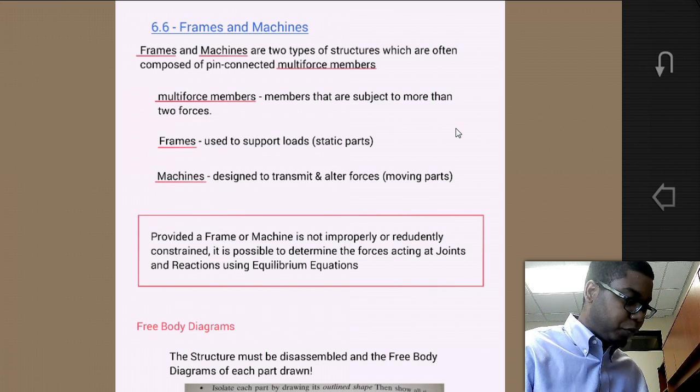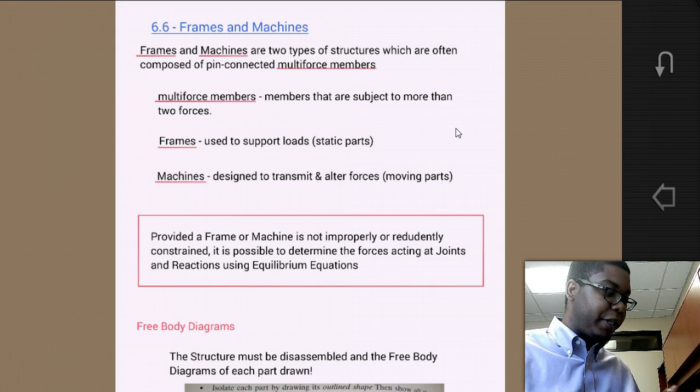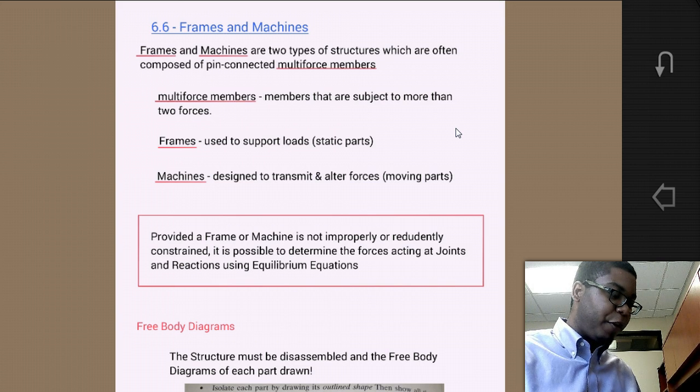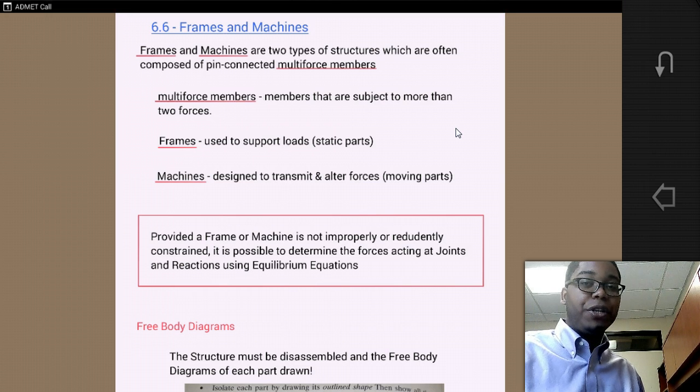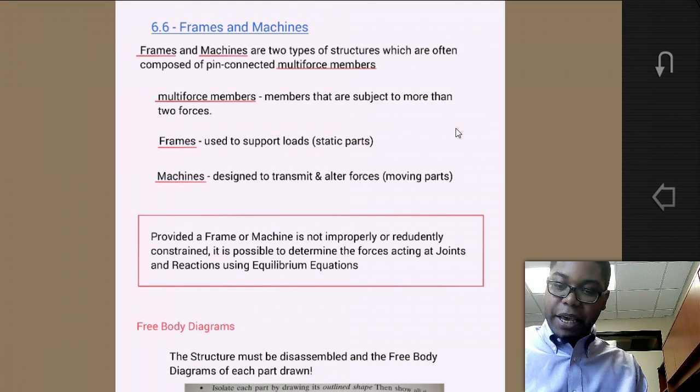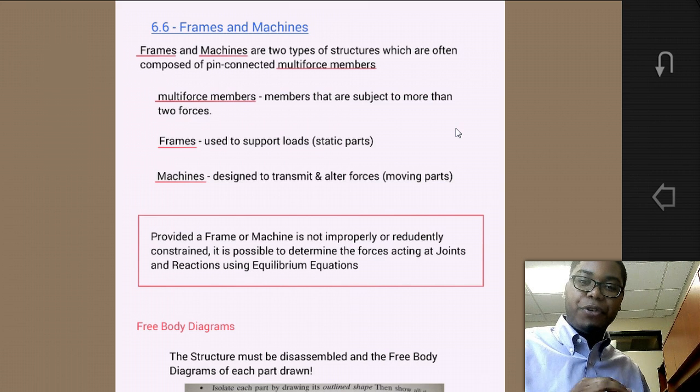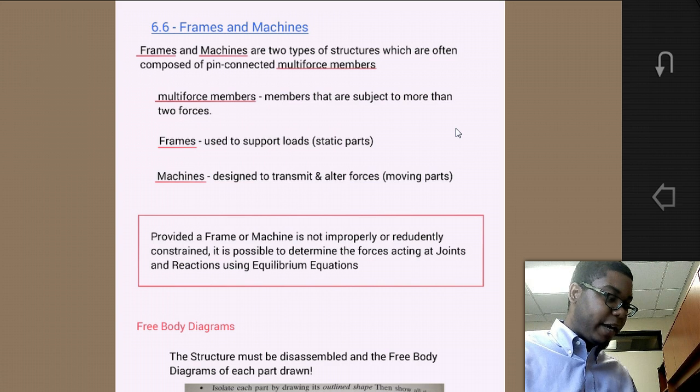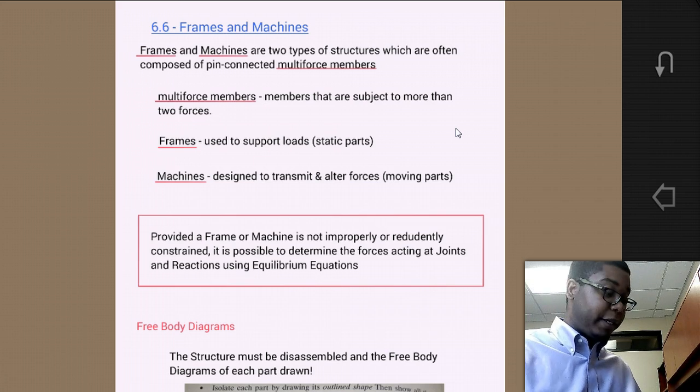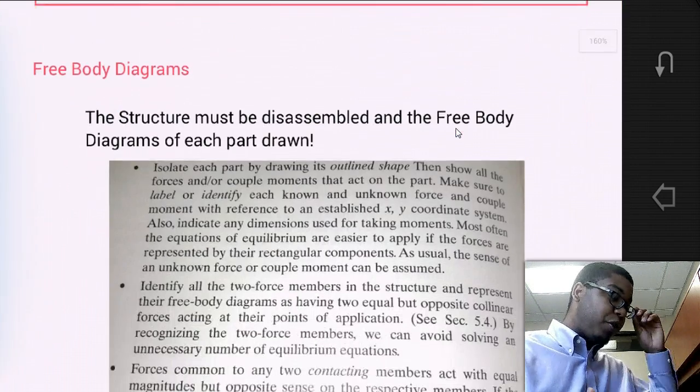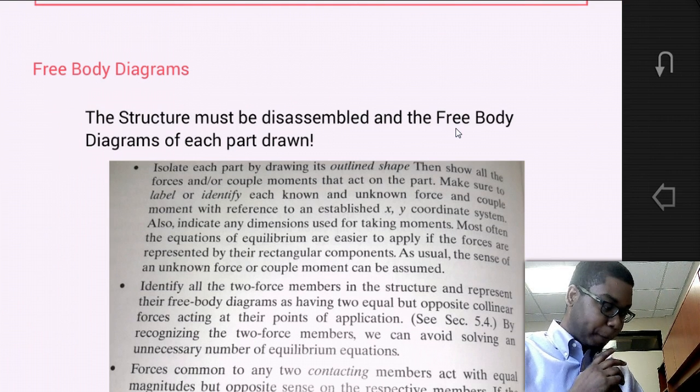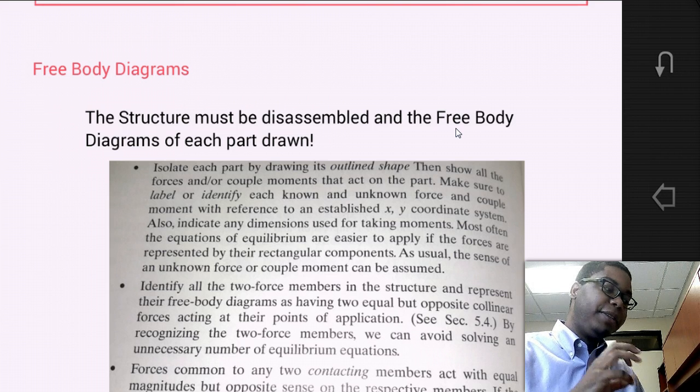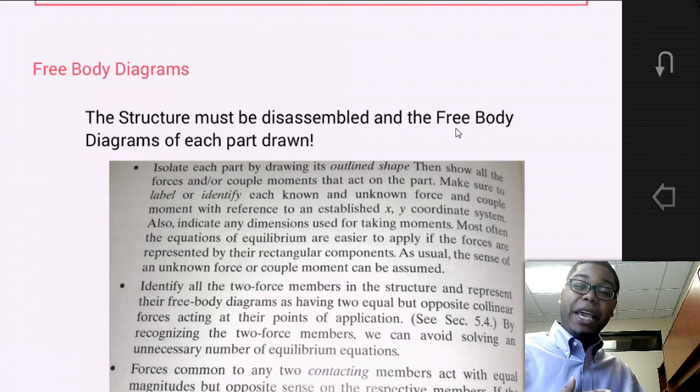Provided a frame or machine is not improperly or redundantly constrained, it is possible to determine the forces acting at joints and the reactions using the equations of equilibrium. We can take a problem, identify the points of interest, the joints, free that body, create a free body diagram where we replace the internal forces or we identify the internal forces and the reaction moments. But it's required that the system not be improperly or redundantly constrained. How do we craft such a free body diagram for a multi-body system? The structure must be disassembled and then a free body diagram must be created for each part.